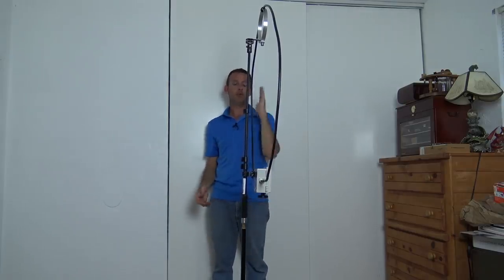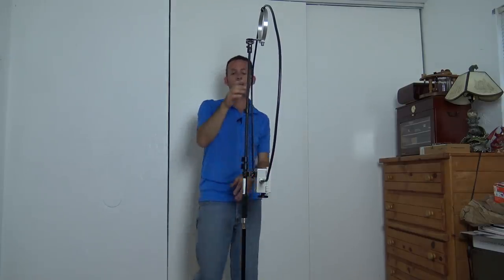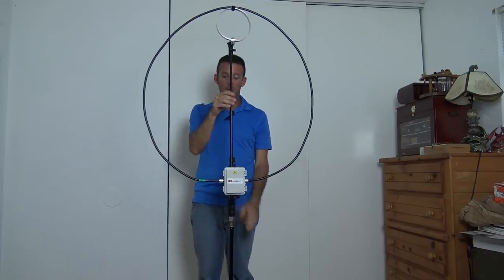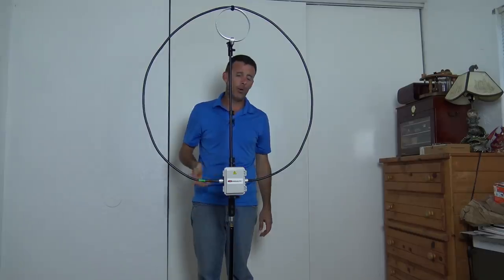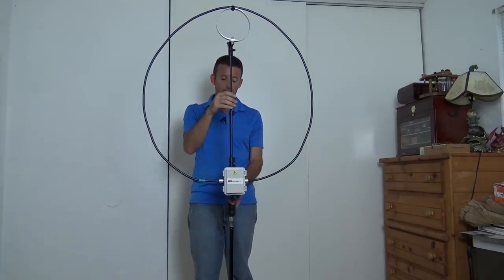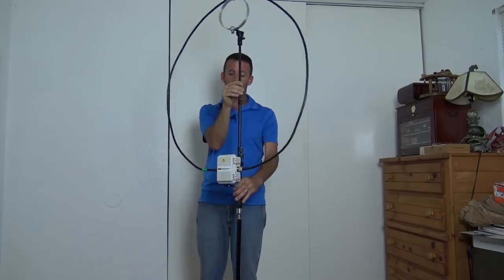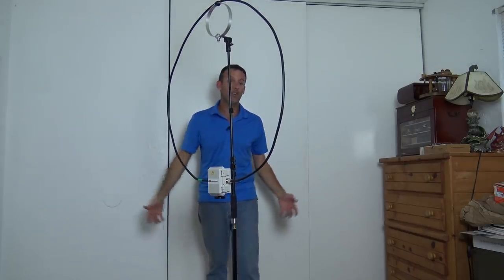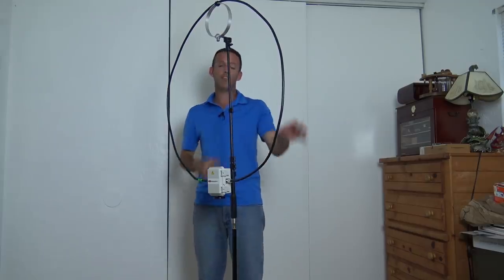That's the way it moves. And actually I tested that theory today at state parks on the air. I had a Slovenia station and he was like an S4 and I just couldn't get him. But then I turned this thing kind of like this so it was sort of facing Europe and he was an S7. So it definitely made an increase in the received signal.